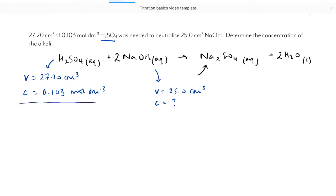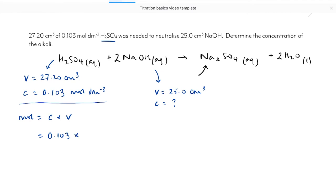If I have both a volume and a concentration, I can always find the number of moles. The number of moles of the acid equals concentration times volume: 0.103 mol dm⁻³ times 27.20. We need our units to be the same. I have a volume in cm³ and a concentration per dm³, so I need to divide my volume by 1000. There are 1000 cm³ in a dm³. If I plug that into my calculator, the number of moles of acid used is 0.0028016 mol. I'm not doing any rounding up until I get to the end.